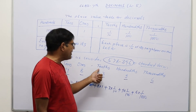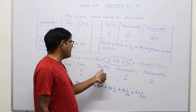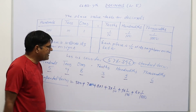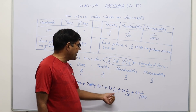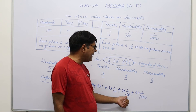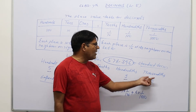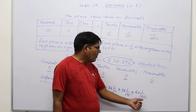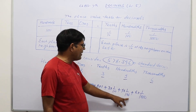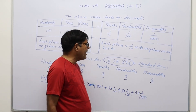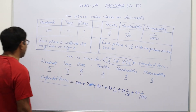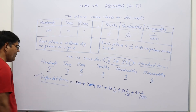Then the digit at tenths — that is just after the decimal point, the first place digit is 3 — so it will be multiplied by 1/10. Then the digit at hundredths is 9, so 9 × 1/100. And the digit at thousandths is 6, so 6 × 1/1000. So: 500 + 70 + 8 + 3 × (1/10) + 9 × (1/100) + 6 × (1/1000). In this way, any decimal number can be written in expanded form.